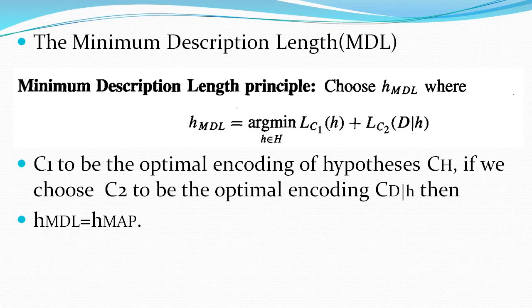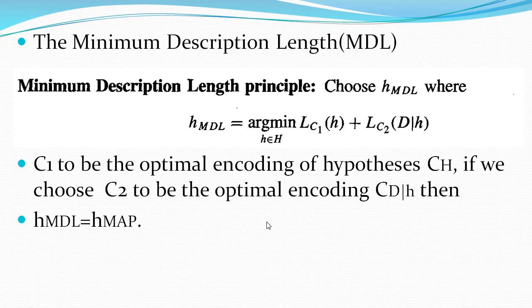We are considering the minimum description length — not maximum — to encode and transmit a message. We apply this principle to the hypothesis using two terms: LC1 and LC2. C1 is one code representing the optimal encoding of the hypothesis H. C2 is the optimal encoding for D given H. So C1 and C2 are optimal encodings for the hypothesis and for D|H respectively.